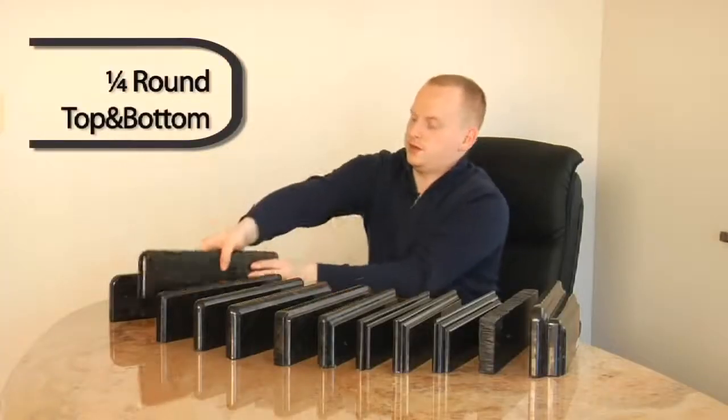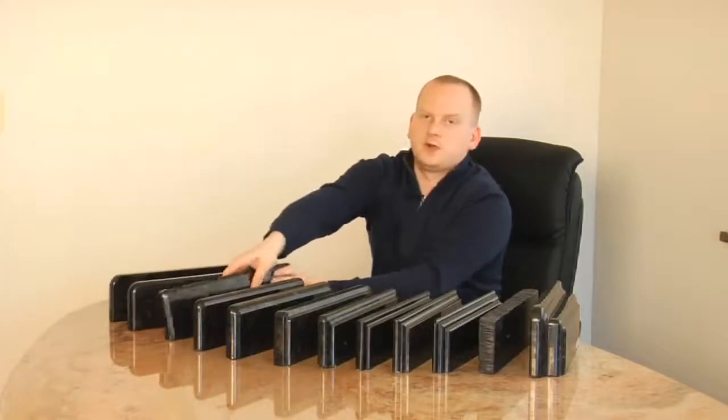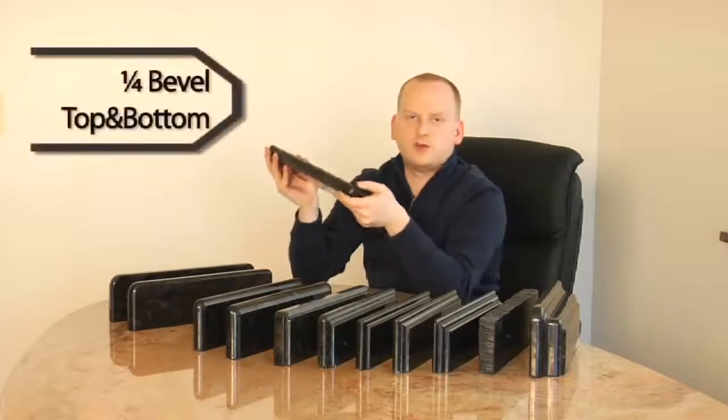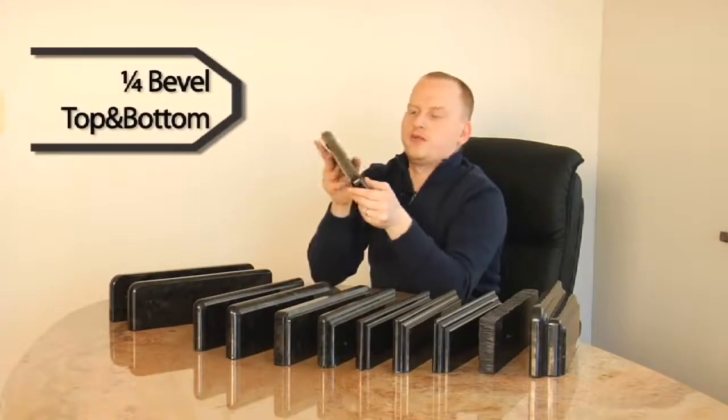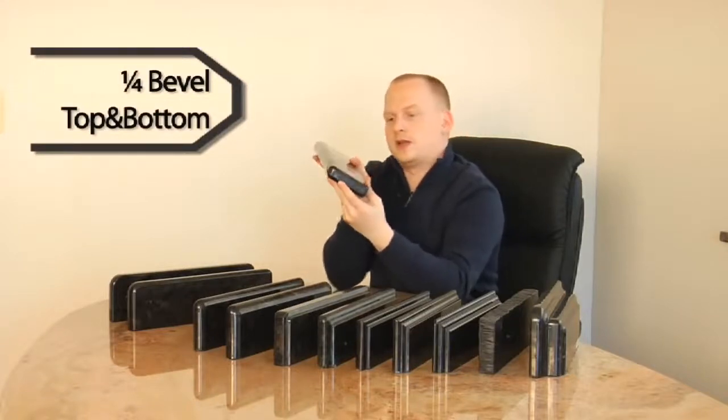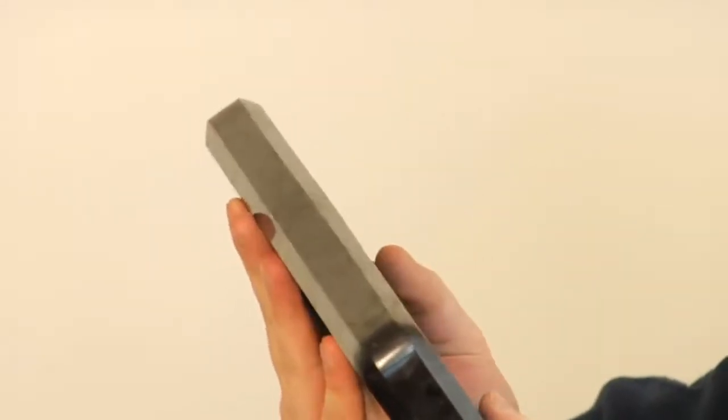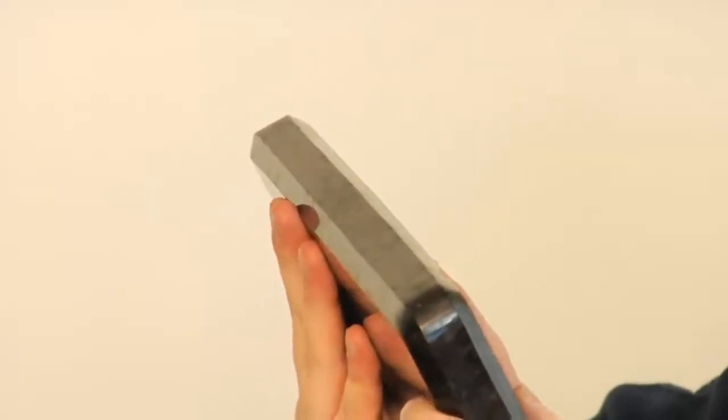And the following edge is very similar, but instead of being round, this is the quarter bevel. And the bevel is just a cut into the stone, it's an angular cut. And you can see it very nicely over here. So this one is also the top and bottom version, which is on both sides. But you can have that with just the top edge finished.